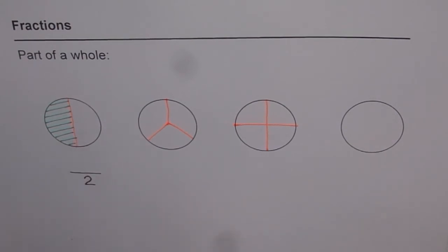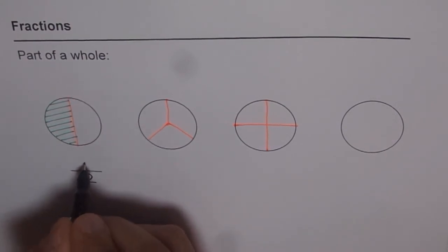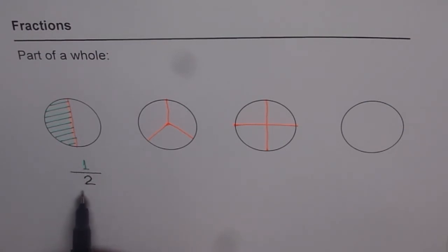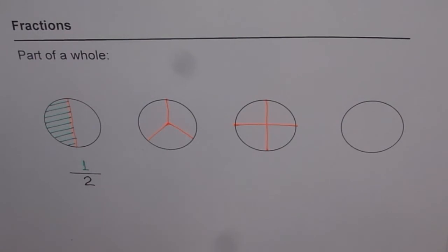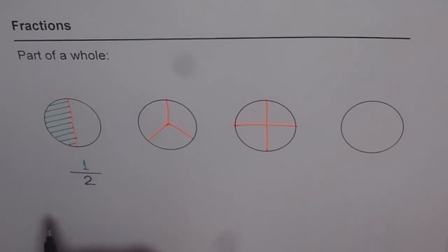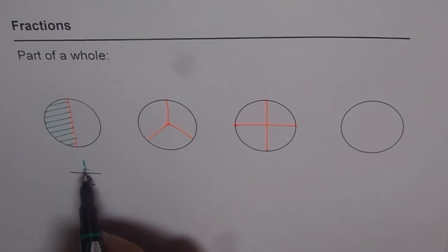We have two equal parts here and how many did I shade green? One. So we write one on the top. This is read as one out of two, or one half — we call it a fraction. So a fraction, for the time being, we can say is something less than whole because it is a part of whole. We get it when we divide a whole thing into equal parts. Here we divided into two equal parts and wrote two below the line and one on top, since we took interest in one. So we say one out of two, or one half.